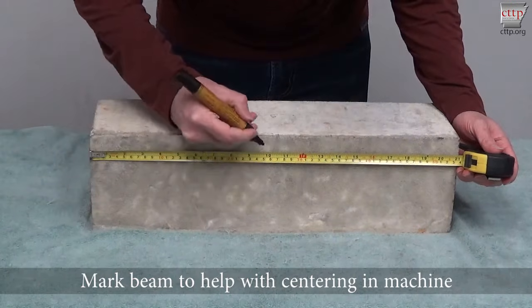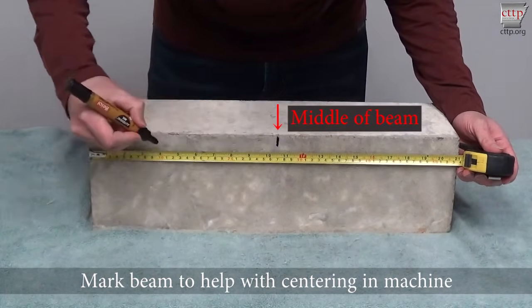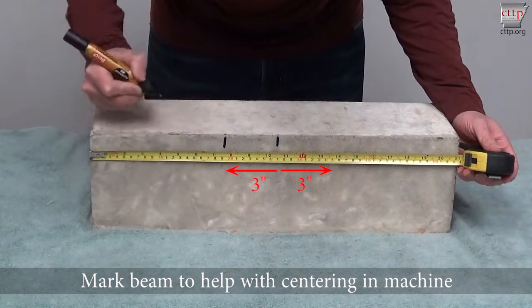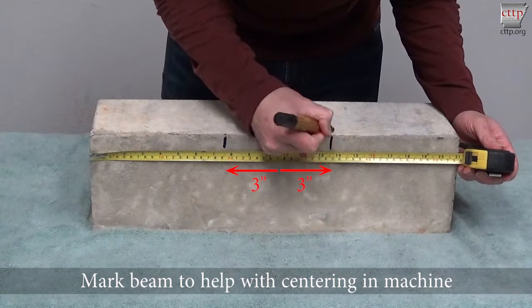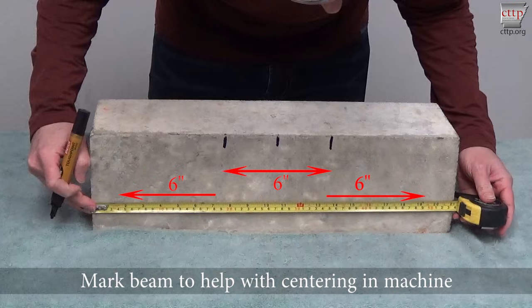Mark the beam to help with centering in the machine. One way of doing this is locating the middle of the beam and marking it. From the middle, measure 3 inches on either side and make another mark. Next, measure 6 inches from both of those marks to make the last mark.